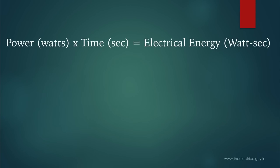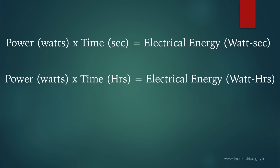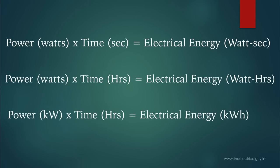The unit of electrical energy depends upon the unit of power and time. If power is in watts and time is in seconds, the unit is watt-seconds. If power is in watts and time is in hours, the unit is watt-hours. If power is in kilowatts and time is in hours, the unit is kilowatt-hours, or kWh. kWh is also used for calculating the monthly charges of electricity. In India, on your electricity bill you will find a column for total units consumed, and one unit equals one kWh of electrical energy. So if your bill says 10 units consumed, it means you have consumed 10 kilowatt-hours of electrical energy.